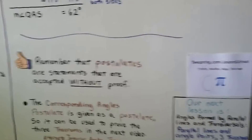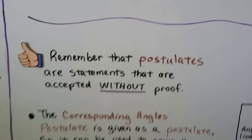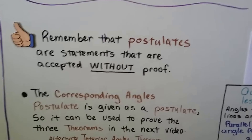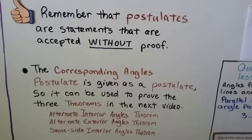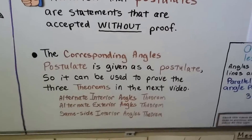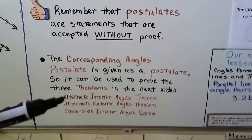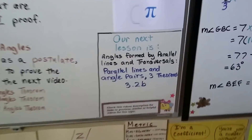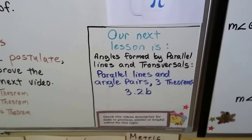Remember that postulates are statements that are accepted without proof. The corresponding angles postulate is given as a postulate, so it can be used to prove the three theorems in our next video. We're going to talk about the alternate interior angle theorem, alternate exterior angle theorem, and same-side interior angles theorem — that's lesson 3.2b on parallel lines and angle pairs.